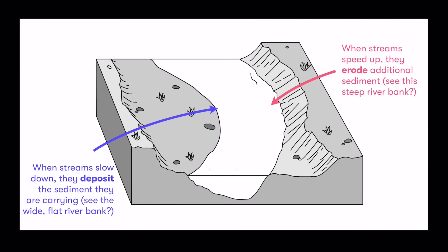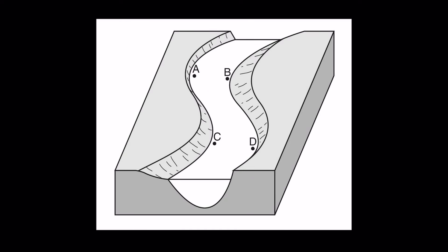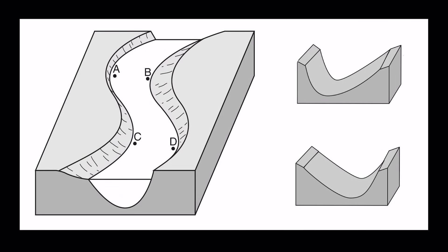You can tell just by looking at a meander where erosion and deposition have taken place. The outside of a curve (point A) has erosion — rock and sediment worn away, giving a steep, jagged slope. The inside of a curve (point B) has deposition — a more wide, flat area where material is dropped off. Similarly, looking at points C and D: C is on the inside with flat slope and deposition; D is on the outside with the steeper slope and erosion.